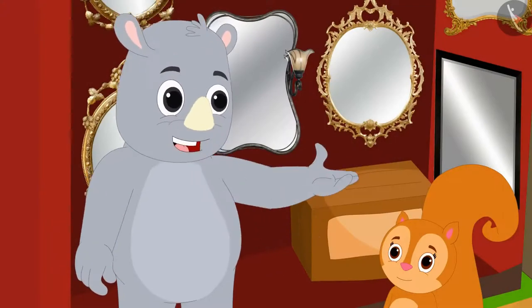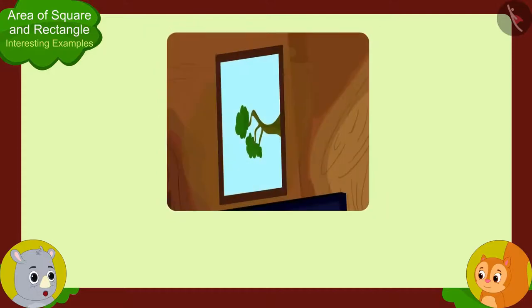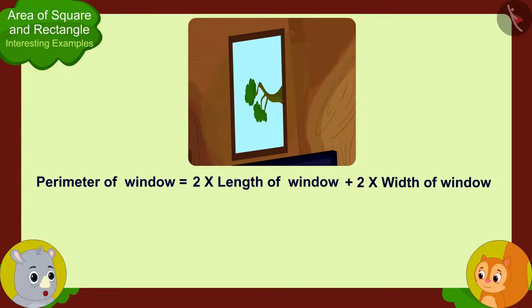Oh, such a small thing. I can help you. Look Chanda, your window is rectangle shaped. That means we can write the perimeter of your window as two times the length of the window plus two times the width of the window. Can you now tell me what is the perimeter of your window?